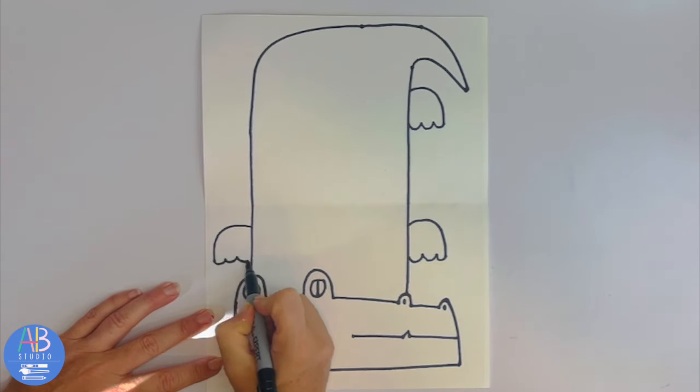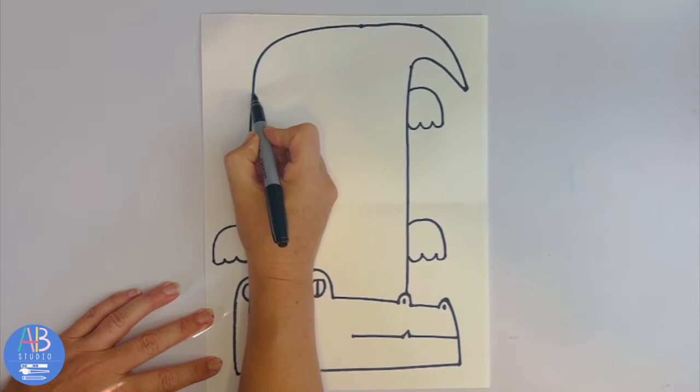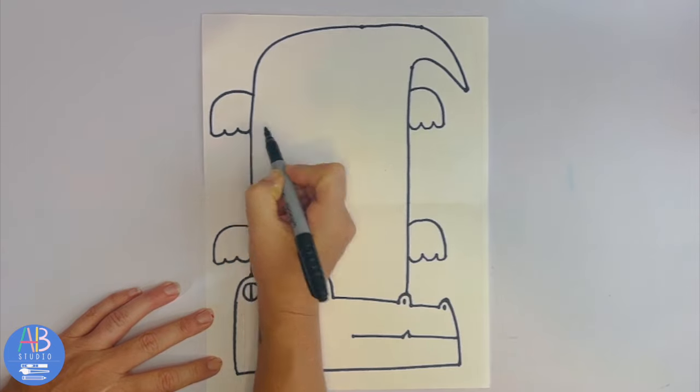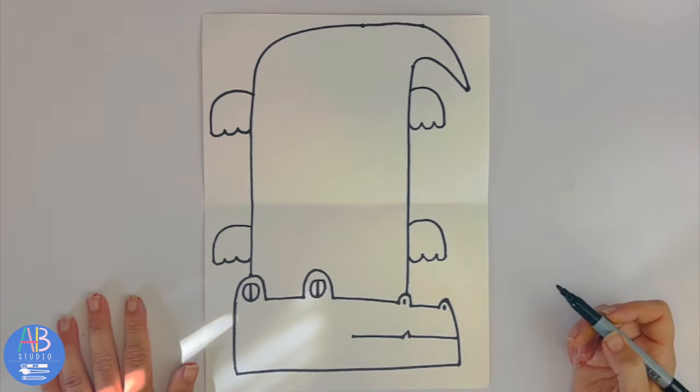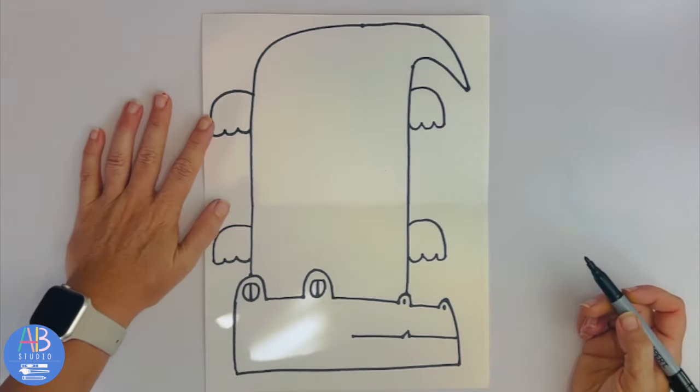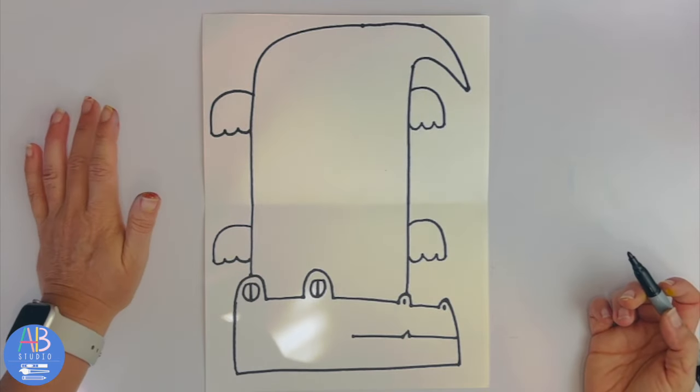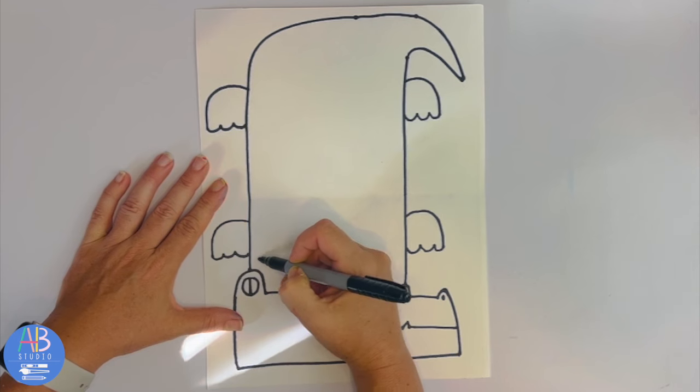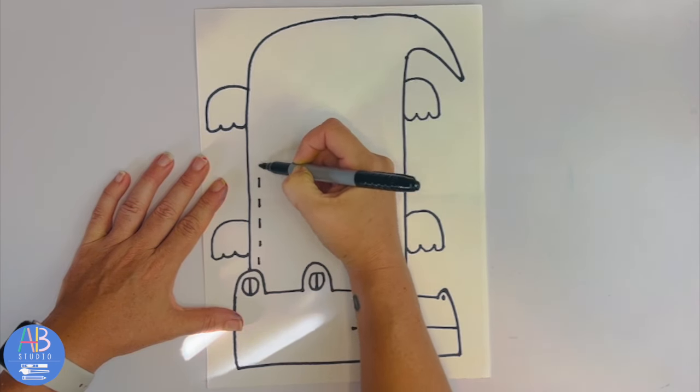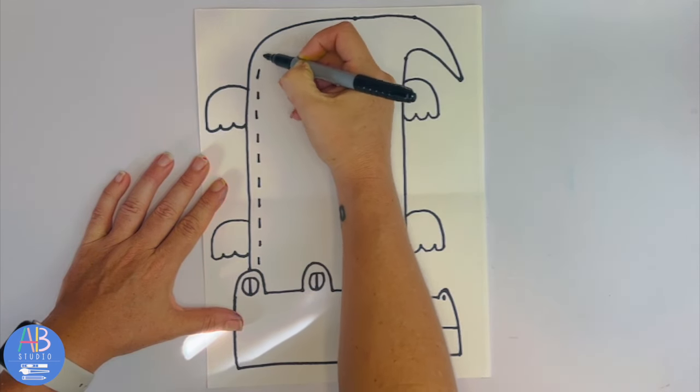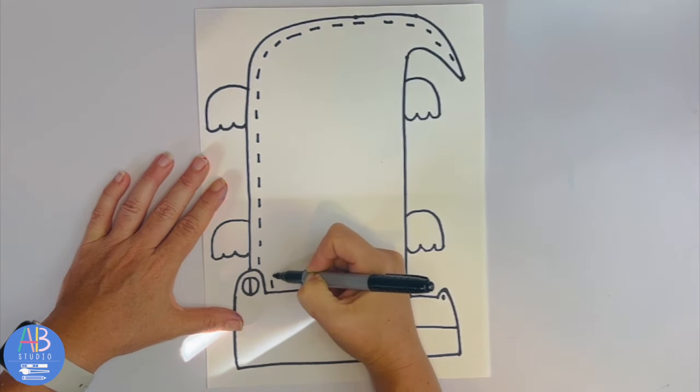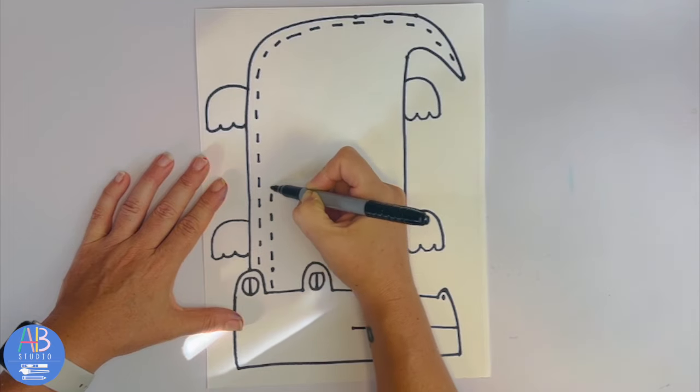Now the detail in the body are these scales. We're gonna use dotted lines to demonstrate this. So I'm just gonna start and make little dashed or dotted lines following the body. And another one next to it - and they don't have to be even.